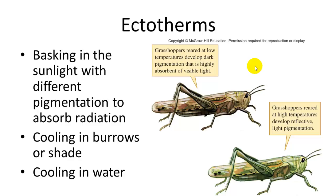Ectotherms generally bask in sunlight to get warm. Some will cool in burrows, shade, or water. Like plants, they may also have different colors to absorb or reflect sunlight. An example from the textbook is grasshoppers: those reared at a low temperature developed dark pigmentation to absorb more heat, while those raised at a high temperature had light pigmentation to reflect sunlight.